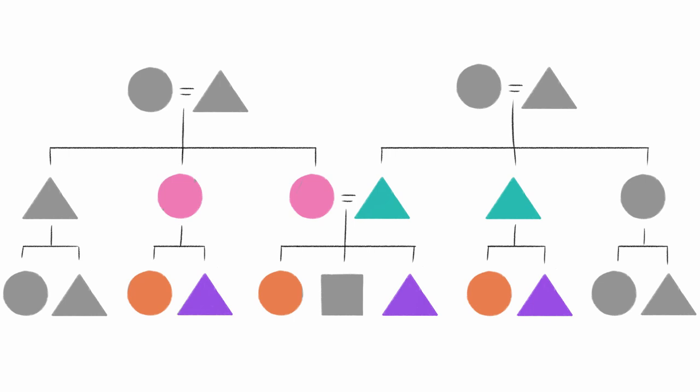In anthropological terms, these are referred to as parallel cousins. But your mother's brother is your uncle, and your father's sister is your aunt. Their children are your cousins. In anthropological terms, these are both cross cousins.